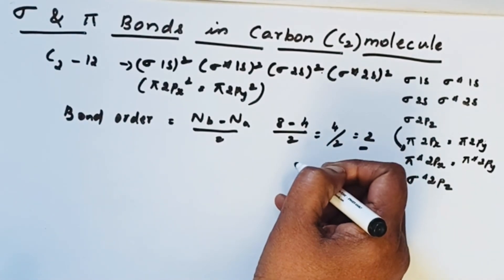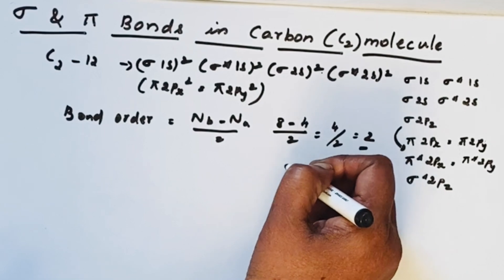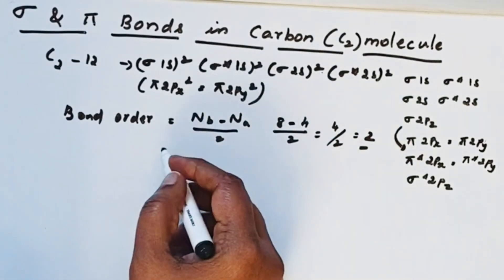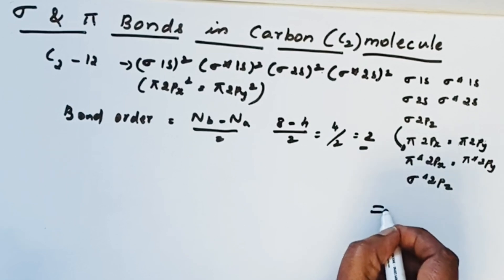So there are 2 bonds, that is a double bond in carbon molecule. In all other molecules if there is a double bond, one is a sigma bond, the first one is a sigma bond, the next one is a pi bond. That means a pi bond is formed along with the sigma bond.